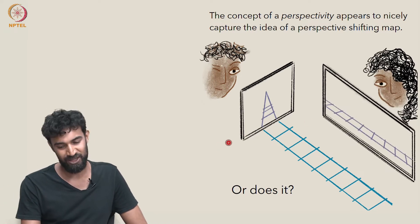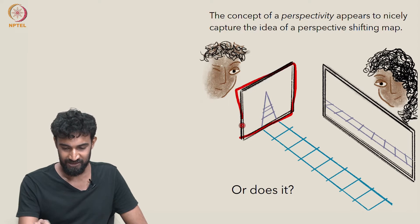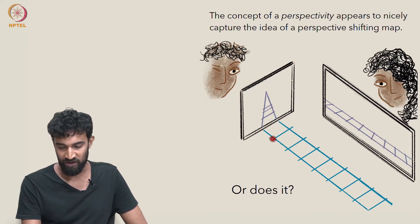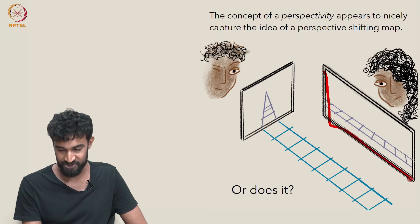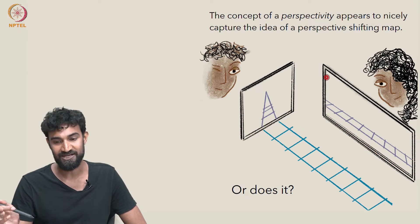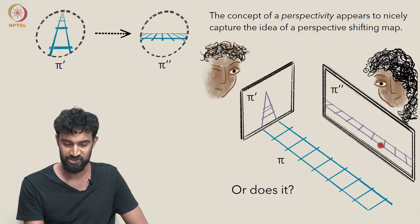So here's a slightly trickier example. Here's a plane, here's one perspective view of these railway tracks, and here's another perspective view of the same railway tracks. So in other words, we have two different perspective images.